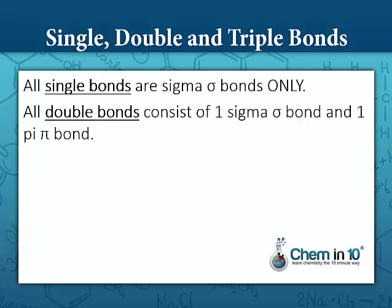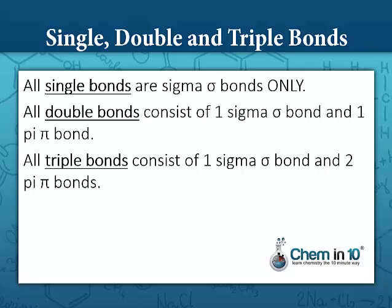All double bonds consist of one sigma bond and one pi bond. Triple bonds consist of one sigma bond and two pi bonds. So all bonds include at least one sigma bond, with additional bonds being pi bonds.